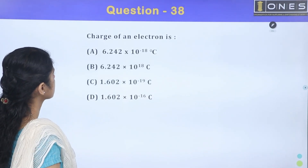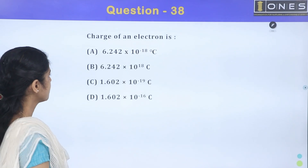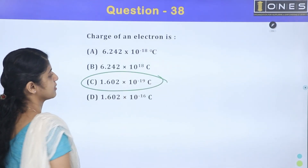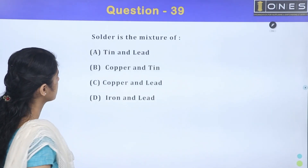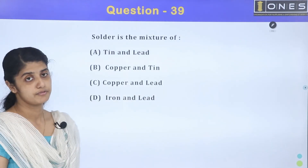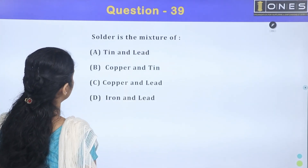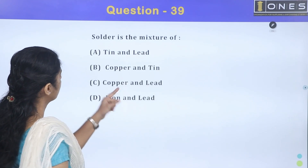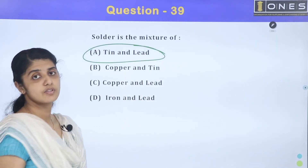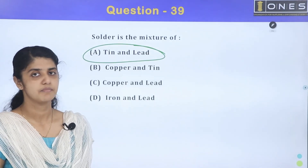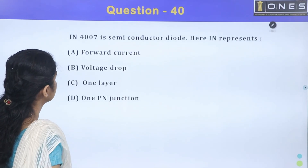The next question is the charge of an electron. Then, the next question: solder is a mixture of tin and lead. The options are tin-lead, copper-tin, copper-lead, and iron-lead. The answer is tin-lead.